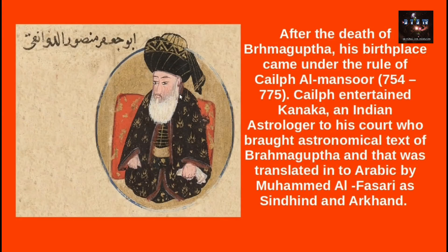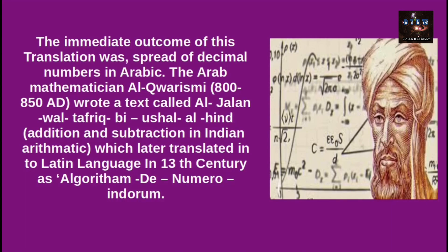After the death of Brahmagupta, his birthplace came under the rule of the Caliphate, Caliph Al-Mansur, 754–775 AD. The Caliph entertained Kanaka, an Indian astrologer, at his court, who brought the astronomical texts of Brahmagupta. These were translated into Arabic by Muhammad Al-Fazari as Sindh Hind and Arkhand. The immediate outcome of this translation was the spread of decimal numbers in Arabic places.